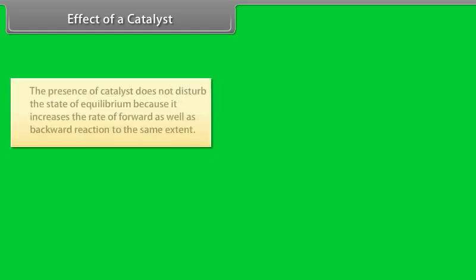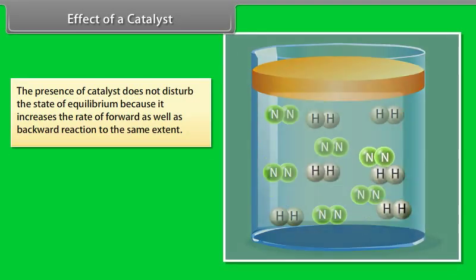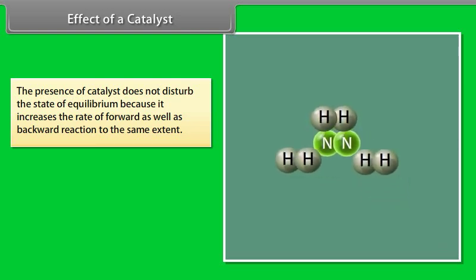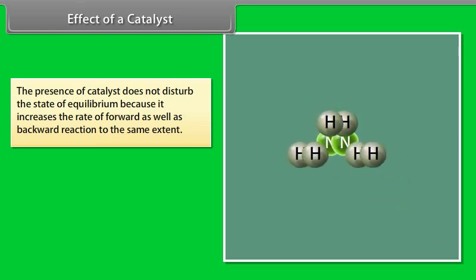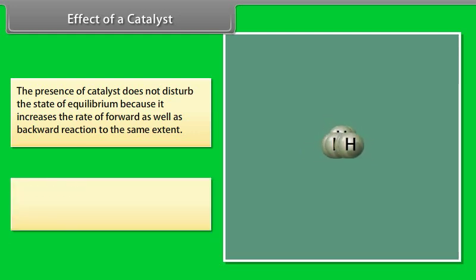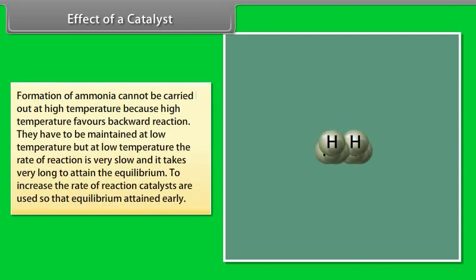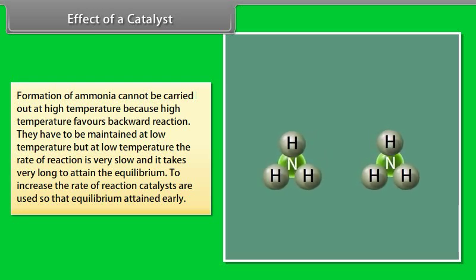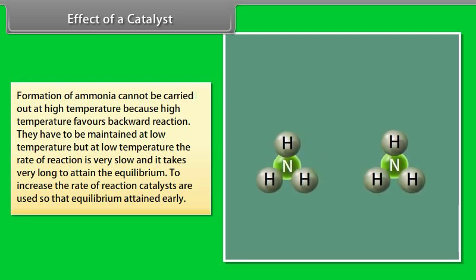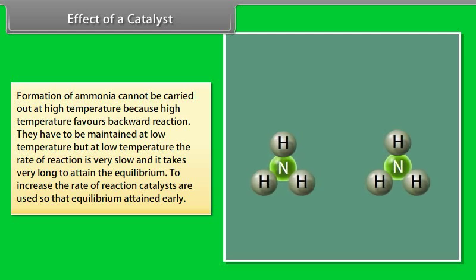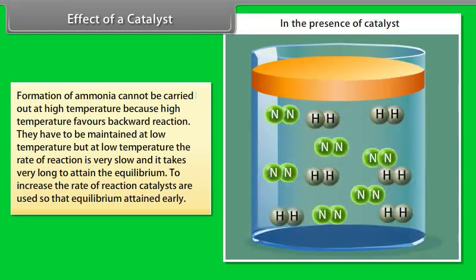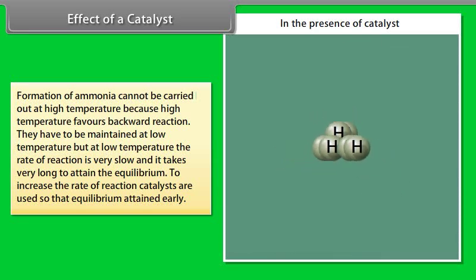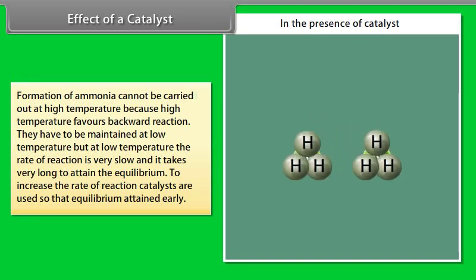Effect of a Catalyst: The presence of a catalyst does not disturb the state of equilibrium because it increases the rate of both the forward and backward reactions to the same extent. The formation of ammonia cannot be carried out at high temperature since high temperature favors the backward reaction. At low temperature, the rate of reaction is very slow and it takes very long to attain equilibrium. Therefore, catalysts are used to increase the rate of reaction so that equilibrium is attained earlier.